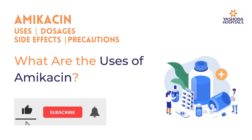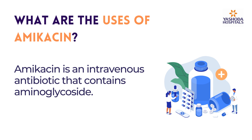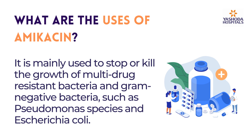What are the uses of amikacin? Amikacin is an intravenous antibiotic that contains aminoglycoside. It is mainly used to stop or kill the growth of multidrug-resistant bacteria and gram-negative bacteria, such as Pseudomonas species and Escherichia coli.